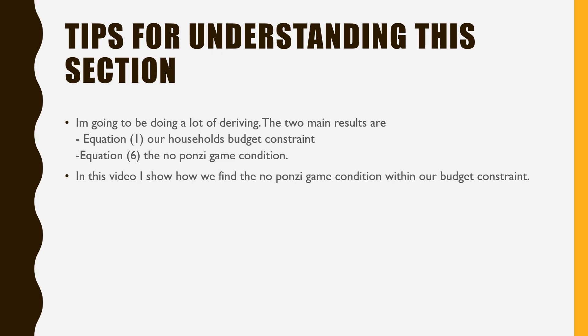Just some tips for understanding this section. I'm going to be doing a lot of deriving. The two main results are equation one, which is our household's budget constraint, and equation six, which is our no Ponzi game condition. In this video, I'm going to show how we find the no Ponzi game condition from within our budget constraint.